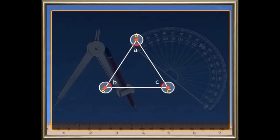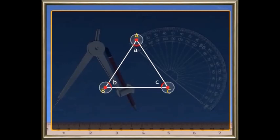Now look at these three points: A, B, and C. The points where two line segments intersect are called the vertices of the triangle. There are three vertices in a triangle.